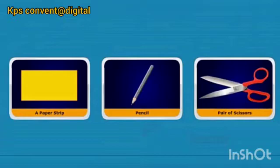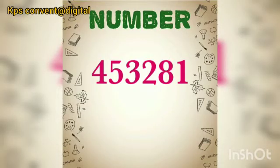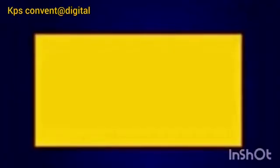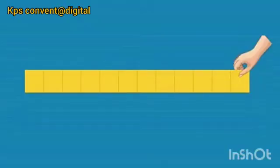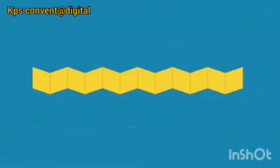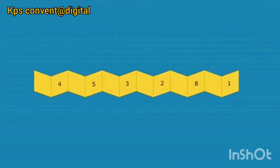Let's start the activity. Let us consider the number as shown on the screen to know the place values. First, we take a paper and cut it to make a strip. Then fold it in a zigzag manner as shown on the screen. Next, mark the assumed number as shown in the image.